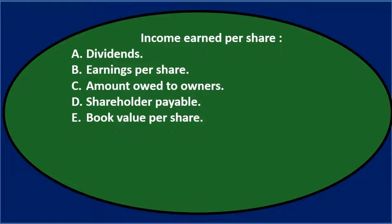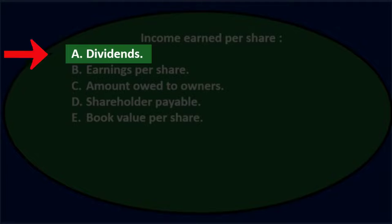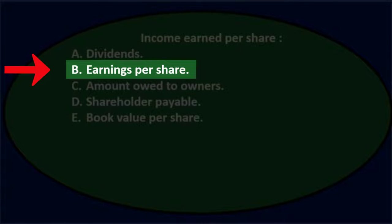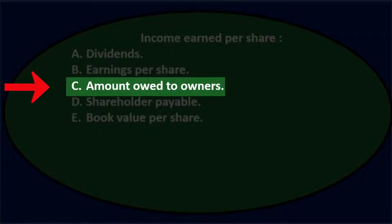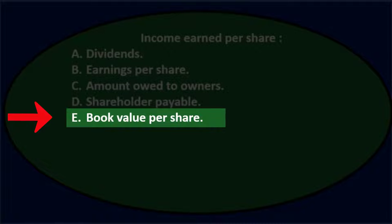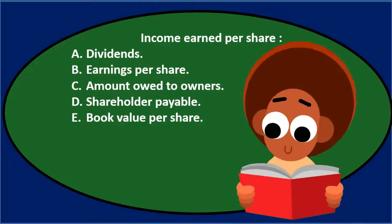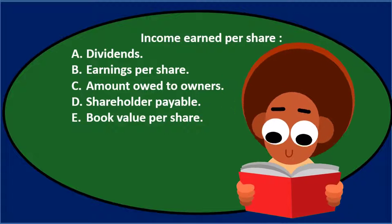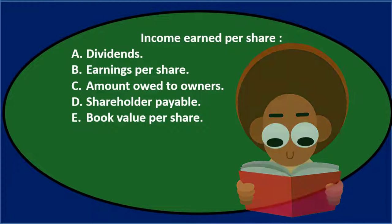First question: Income earned per share is — A. dividends, B. earnings per share, C. amounts owed to owners, D. shareholder payable, E. book value per share. We'll go through this using the process of elimination to narrow this down.